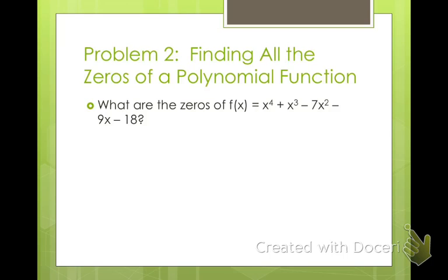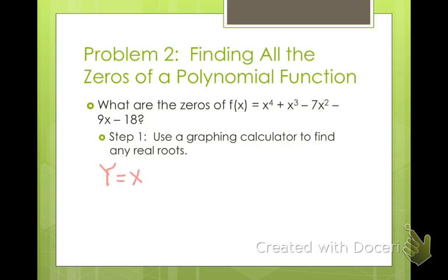So let's find all the zeros. I'll have f of x equals x to the fourth plus x cubed minus 7x squared minus 9x minus 18. This time we're going to use our graphing calculator to find any of your roots. So go ahead and put this into your y1 function. So do y1 equals, and then you're going to have to do x carat 4 plus x carat 3 minus 7x squared minus 9x minus 18, and then go ahead and hit graph.